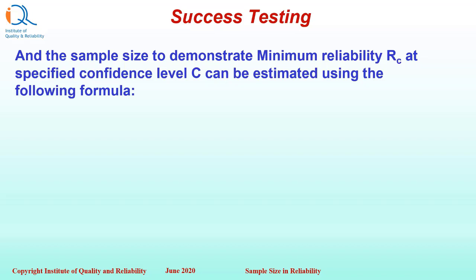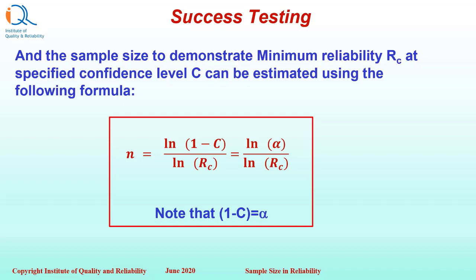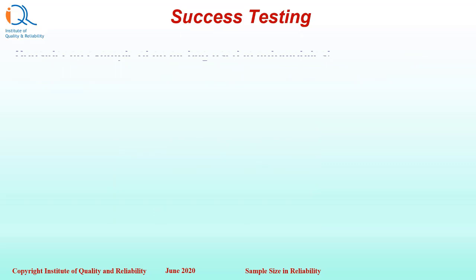The sample size to demonstrate minimum reliability Rc is: n equals ln(1 minus C) upon ln(Rc). Here, 1 minus confidence level C is sometimes called alpha risk or type 1 error, so we can also write this equation as ln(alpha) upon ln(Rc). Note that 1 minus confidence level C equals alpha.